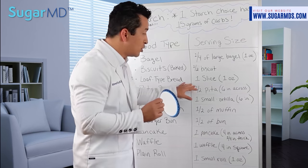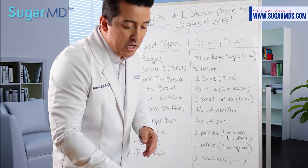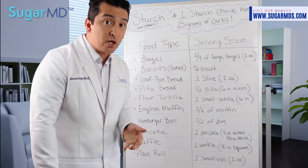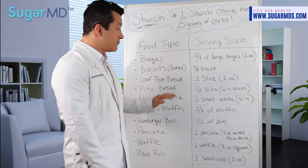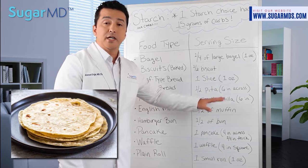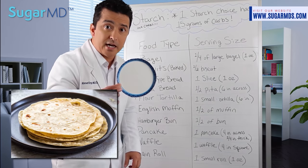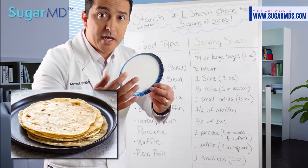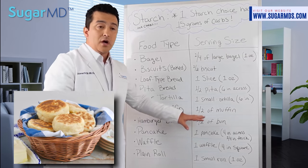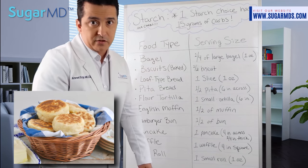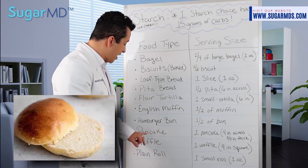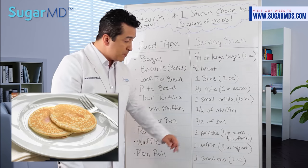Half a pita is 15 grams, so having a whole pita gives you 30 grams of carbs from just the pita. A small flour tortilla, also about six inches, is 15 grams. Half an English muffin is 15 grams, making the full muffin 30 grams. Half a hamburger bun is 15 grams.